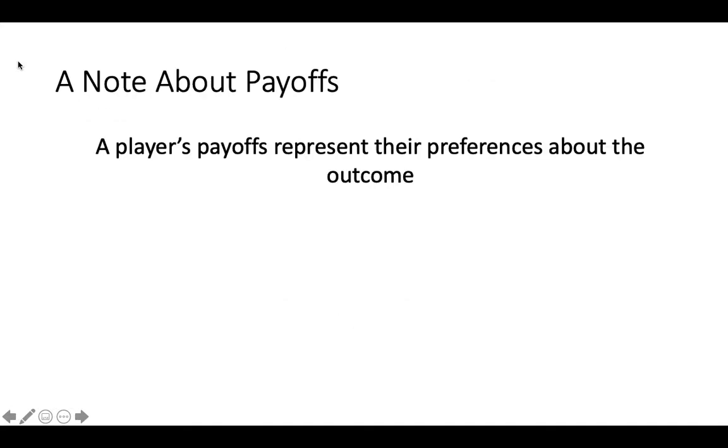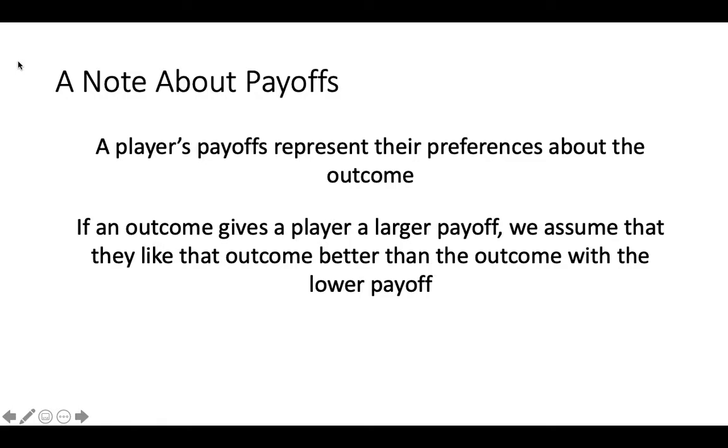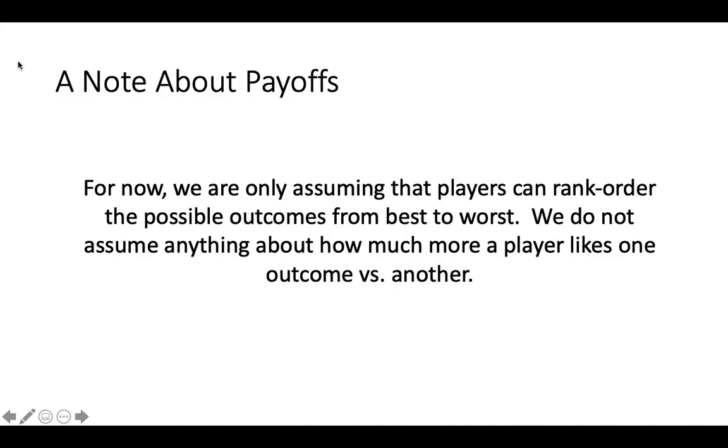Before we proceed, I want to make a note about payoffs. A player's payoffs represent their preferences about different outcomes. If a given outcome gives a player a higher payoff, we assume that they like that outcome better than an outcome with a lower payoff. For now, all we are assuming is that players can rank order possible outcomes. Thus, they can only say that one outcome is better or worse than another. We are not assuming anything about how much better or how much worse one outcome is than another.